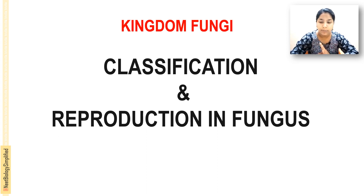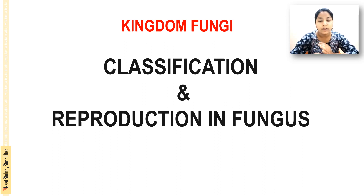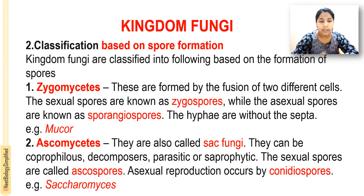In the last video, we talked about the classification based on the mode of nutrition: saprophytic, parasitic, and symbiotic. Saprophytic means they live on dead organic matter. Parasitic means they live on other organisms, get benefits from the host, and are also harmful to the host. Symbiotic means they live on another organism where they are mutually benefited — living in mutual understanding. In this video, you can see the classification based on spore formations.